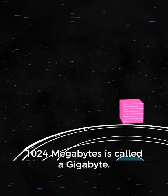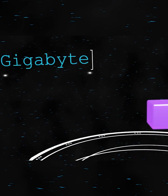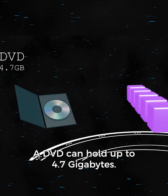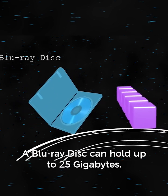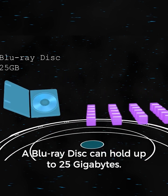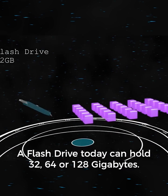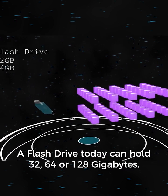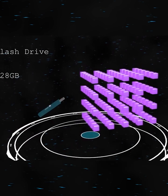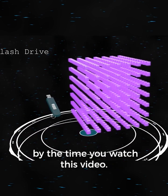1024 megabytes is called a gigabyte. A DVD can hold up to 4.7 gigabytes. A Blu-ray disc can hold up to 25 gigabytes. A flash drive today can hold 32, 64, or 128 gigabytes. They'll probably have something larger by the time you watch this video.